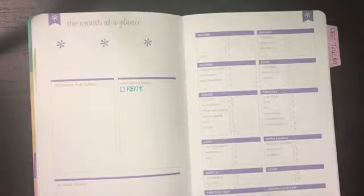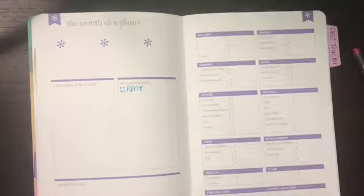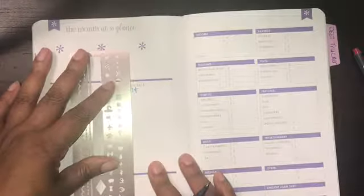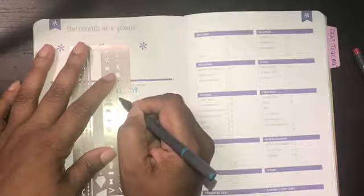For the month of September we already paid rent but we're gonna put it right here. I was working on my budget because I got new stencils right here from Walmart for a dollar to dollar fifty. I also got one from Amazon so I can make my squares more even.